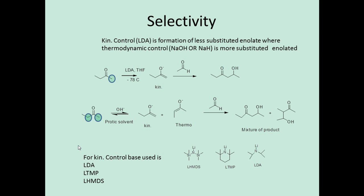Kinetic versus thermodynamic control: when LDA is added to a substrate, it abstracts the less hindered (less substituted) alpha-hydrogen, giving the kinetic enolate, which upon addition gives the kinetically controlled product. When protic solvents with NaOH or sodium hydroxide are used, both kinetic and thermodynamic products are possible. Thermodynamic control favors the more substituted double bond — the more stable enolate. Thus kinetic control gives the less substituted enolate, while thermodynamic control gives the more substituted enolate, and a mixture of products is obtained.